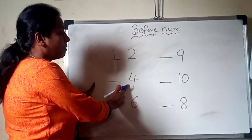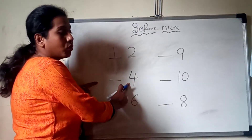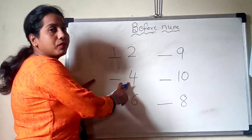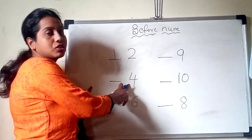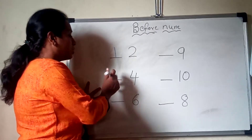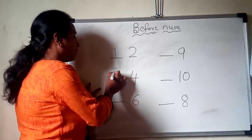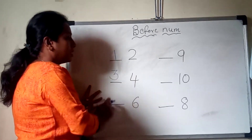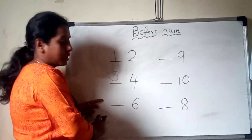Now here 4. Before 4, which number is this? 1, 2, 3 — so here it will come 3. Very good.